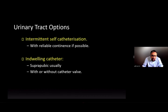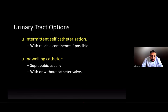Intermittent self-catheterization is a very popular form of management, clearly relying on adequate hand function, and has been the mainstay of managing spinal injury patients ever since Lapides first described it. The least desirable option is the indwelling catheter, usually placed suprapubically to prevent long-term urethral damage, and this can be used with or without a catheter valve.